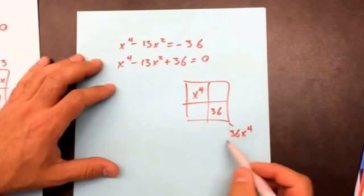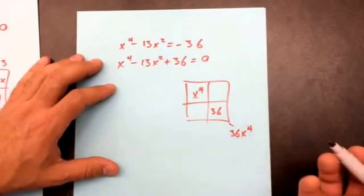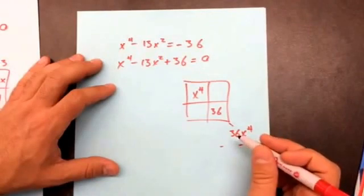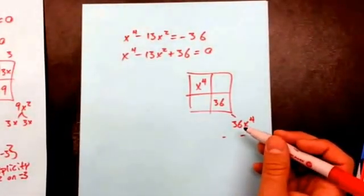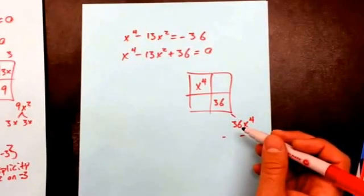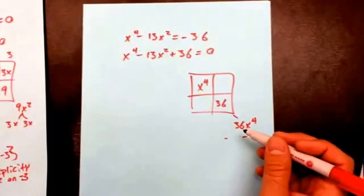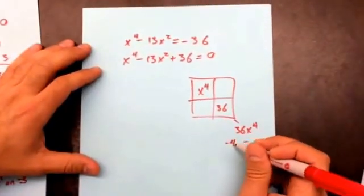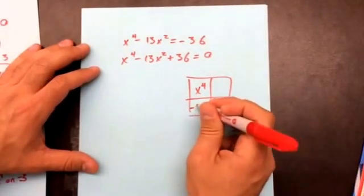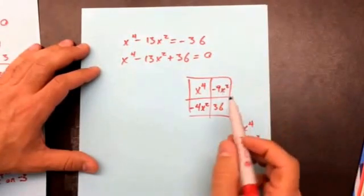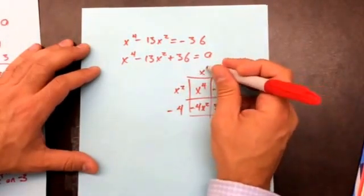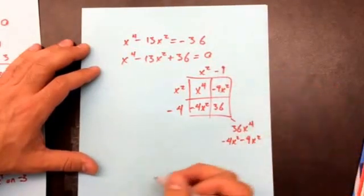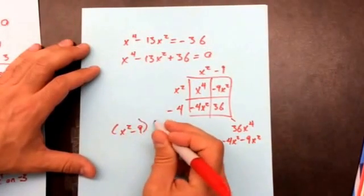I need two things that multiply to 36x⁴ and add to −13x². Both numbers will be negative — that's −4x² and −9x², which go into the box. Factoring out of the rows and columns: I can factor out −4 from one pair and x² from another, giving me the factors (x² − 9) and (x² − 4).